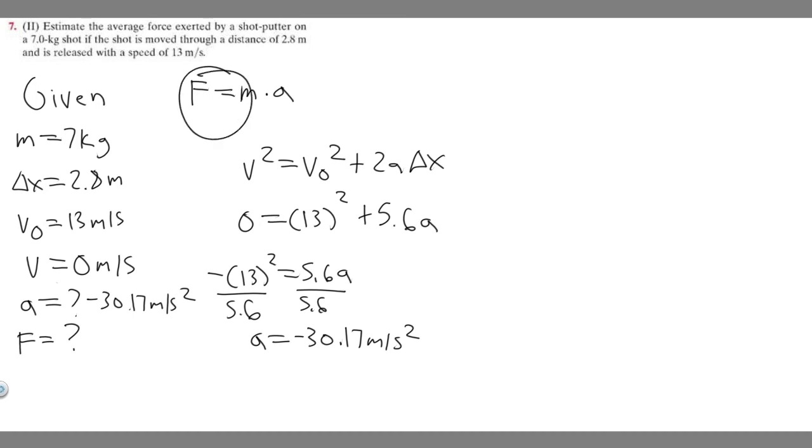And so now we've got acceleration correct, and we have mass. So what we can do is solve for the force. So force equals the mass, which is just 7, times the acceleration, which is minus 30.17. And so we have the correct units, right? Because our mass has to be in kgs. Acceleration has to be meters per second squared. And so if you go ahead and do this, 7 times minus 30.17 is going to be minus 211.19.